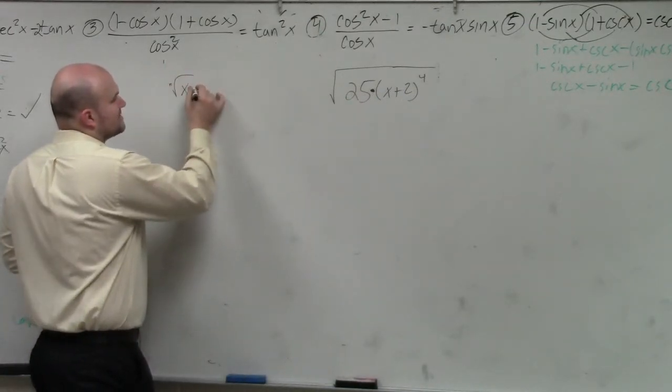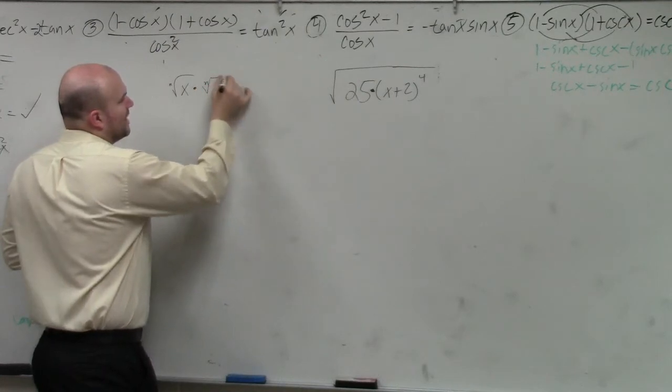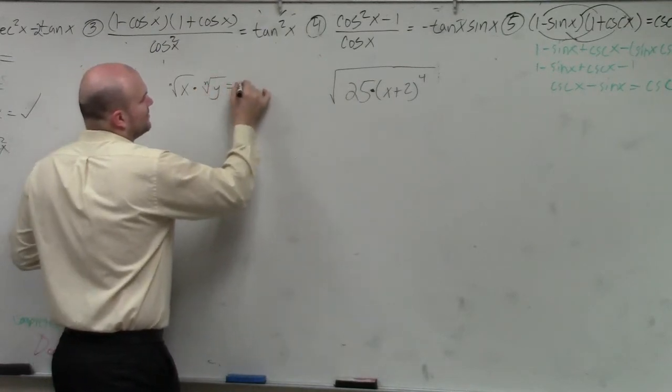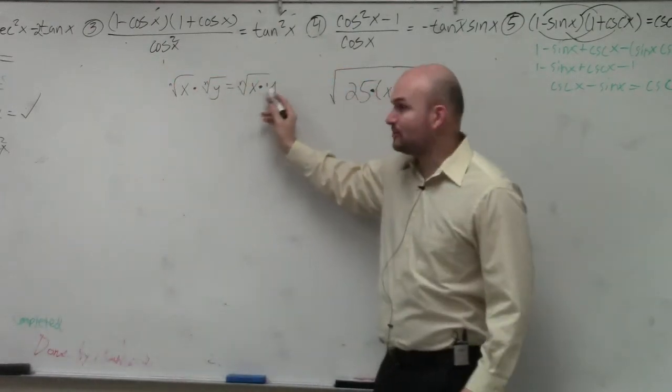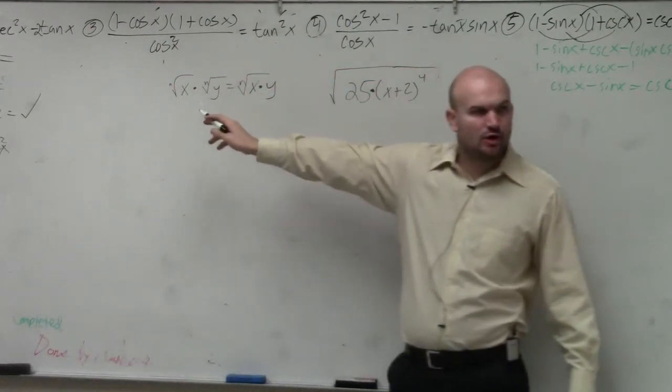Like if I have the nth root of x times the nth root of y, that equals the nth root of x times y. So as long as terms are separated by multiplication, you can separate them into their own radical.